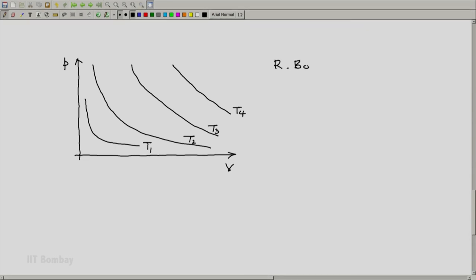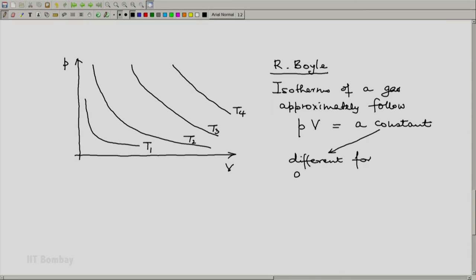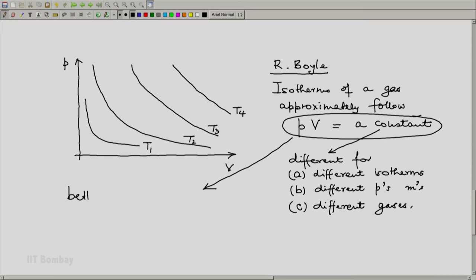So Boyle discovered that isotherms of a gas approximately follow the relation that pressure and volume product is a constant. The constant is different for different isotherms, which is good. The value of the constant can be used as a measure of temperature. But it is also different for different pressures or different masses. For the same volume, if you increase the pressure, you are increasing the mass of the gas in our system. And it also depends on which gas.